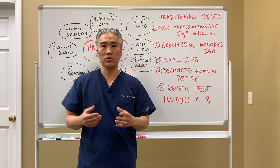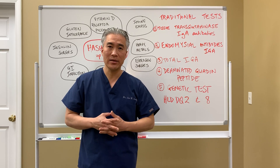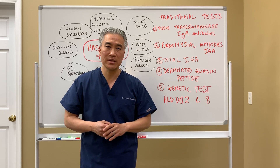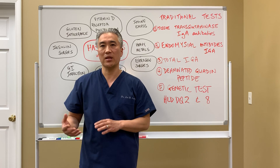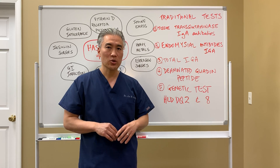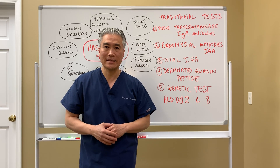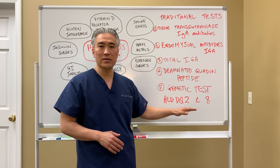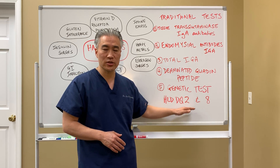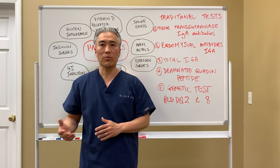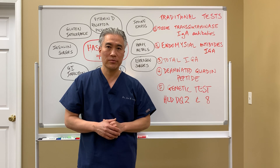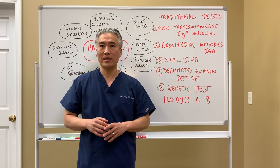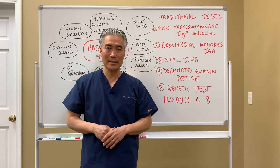The HLA-DQ2 and DQ8 genetic test is useful for people already on a gluten-free diet who want to know if they have a genetic predisposition to develop celiac disease. It doesn't mean you have celiac disease — it means your prevalence is higher than the general population. It's looking at genetic predisposition, not whether you actually have celiac disease.